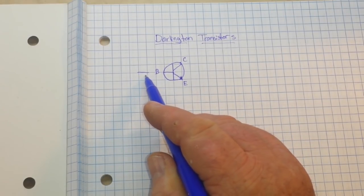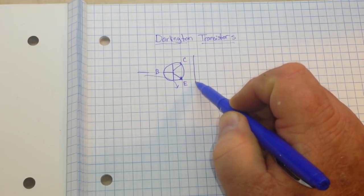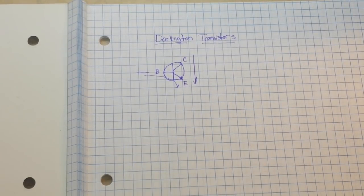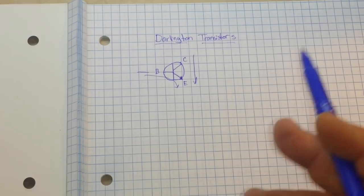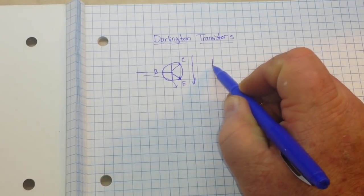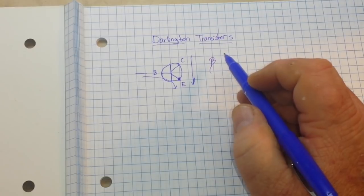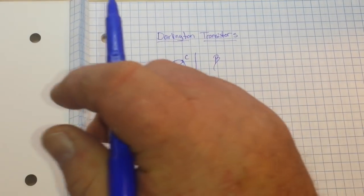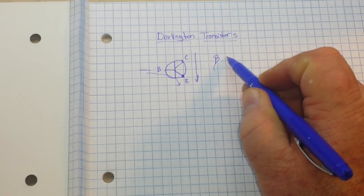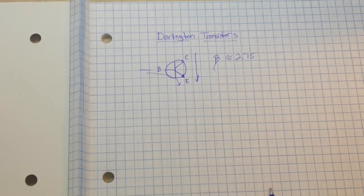...that flows from the base-emitter junction, it induces a larger current in the collector-emitter junction, allowing the transistor to act as an amplifier. We call that the gain. The gain of a standard transistor, for instance a 2N2222, is somewhere in the area of 275 times or so.